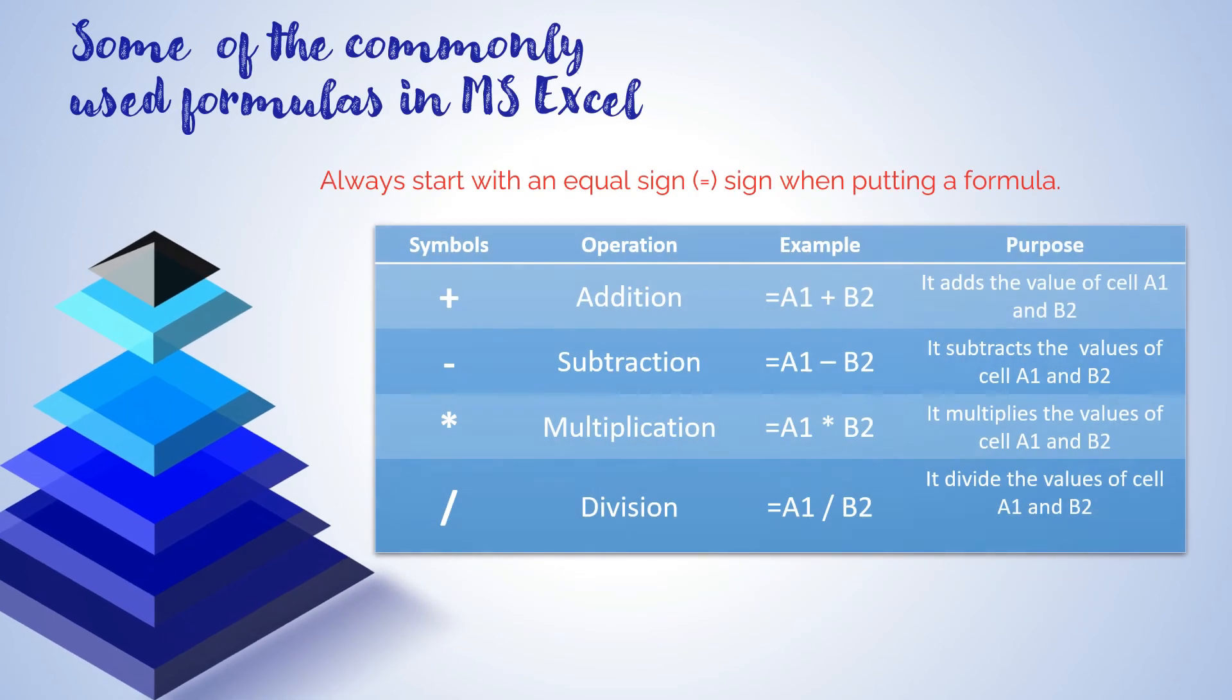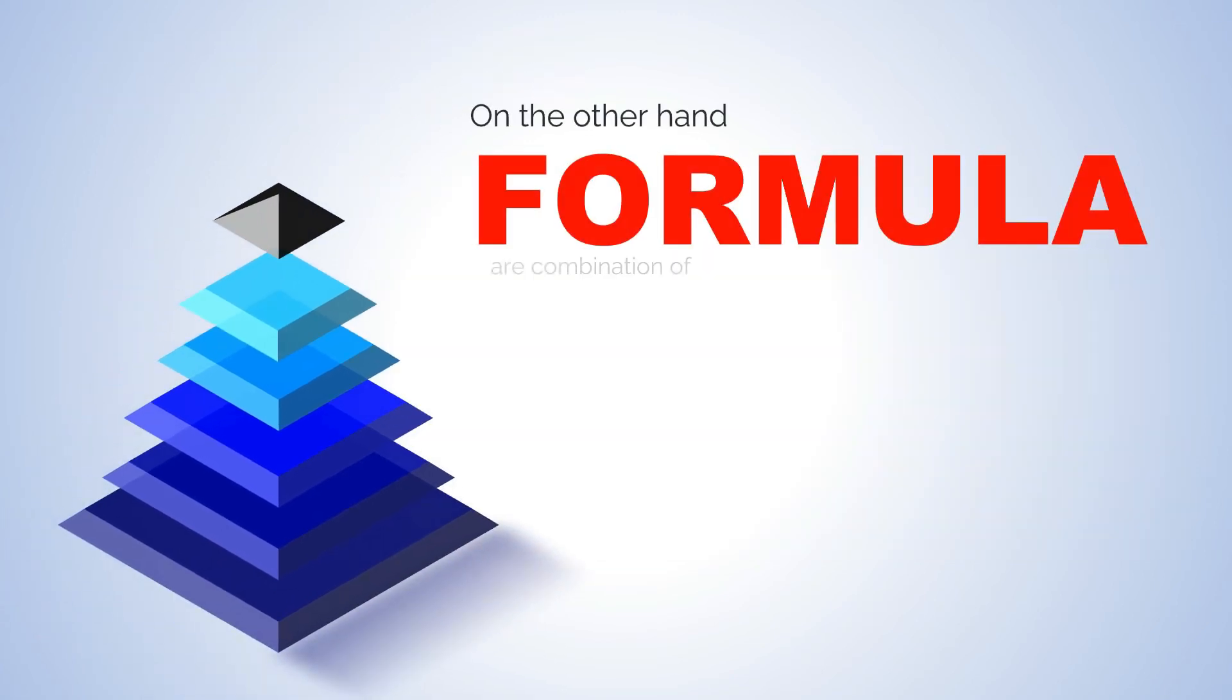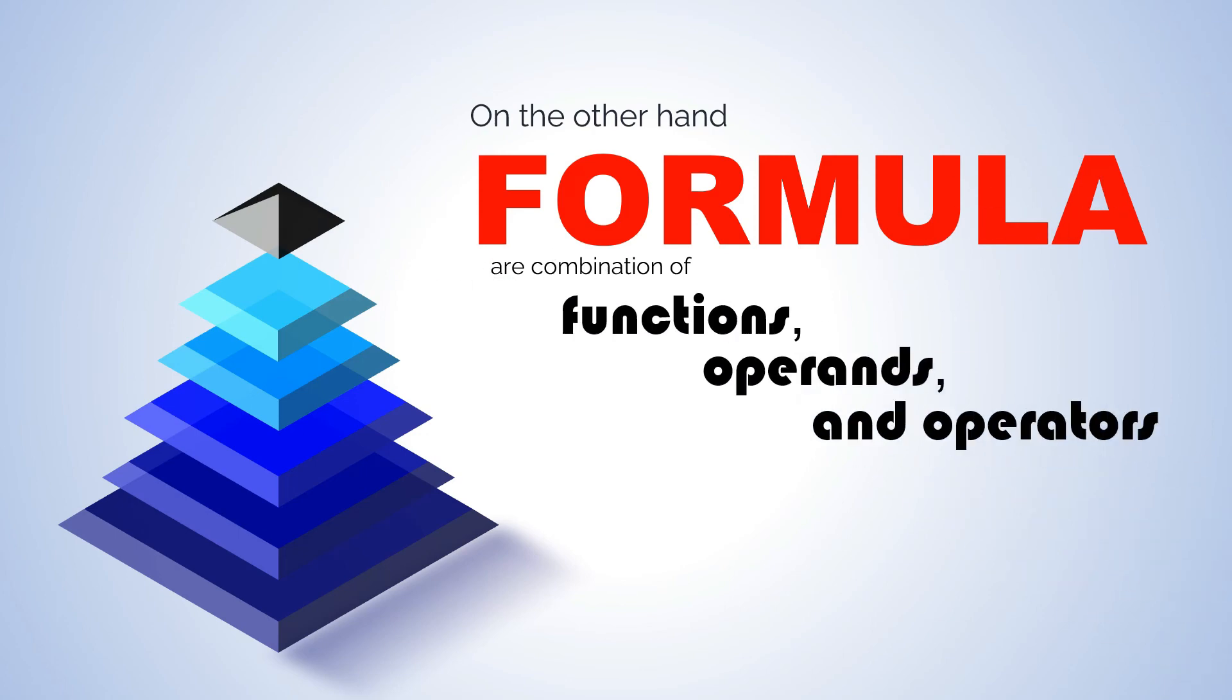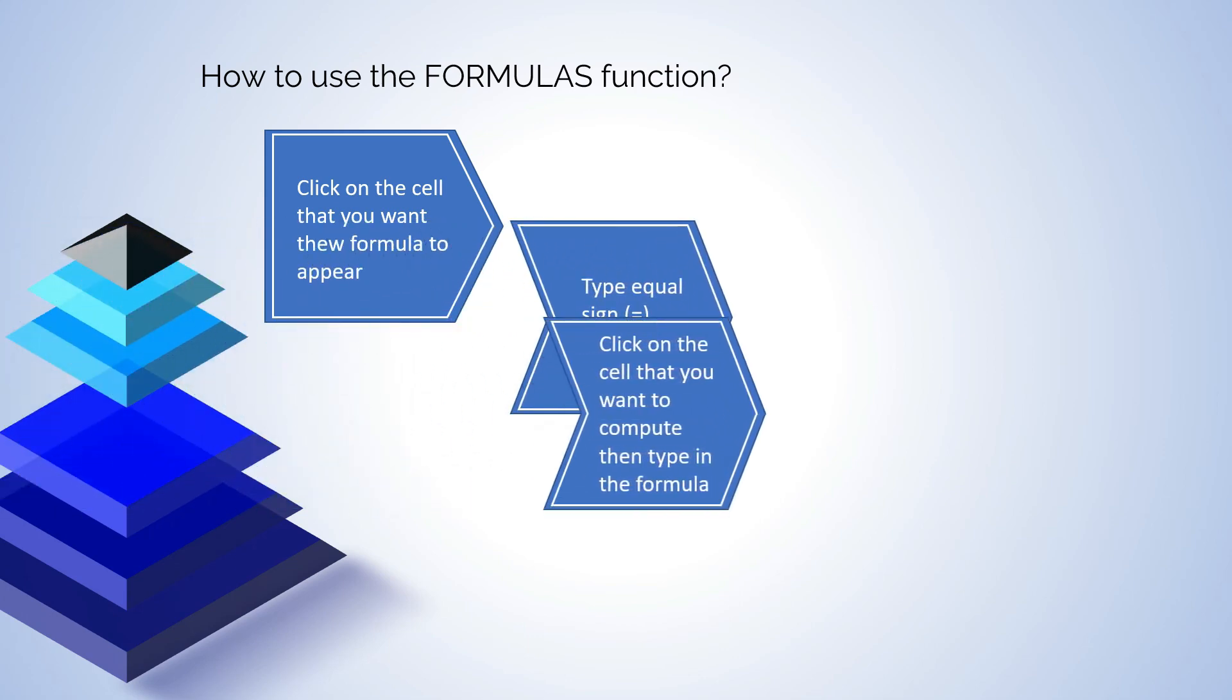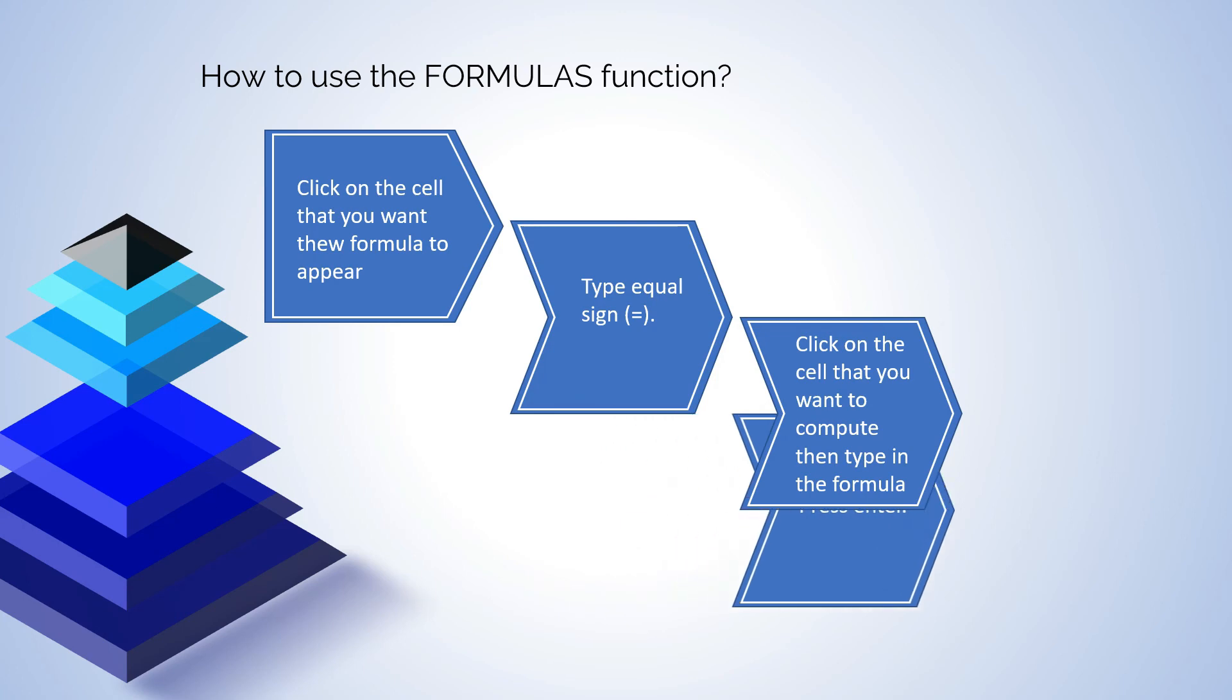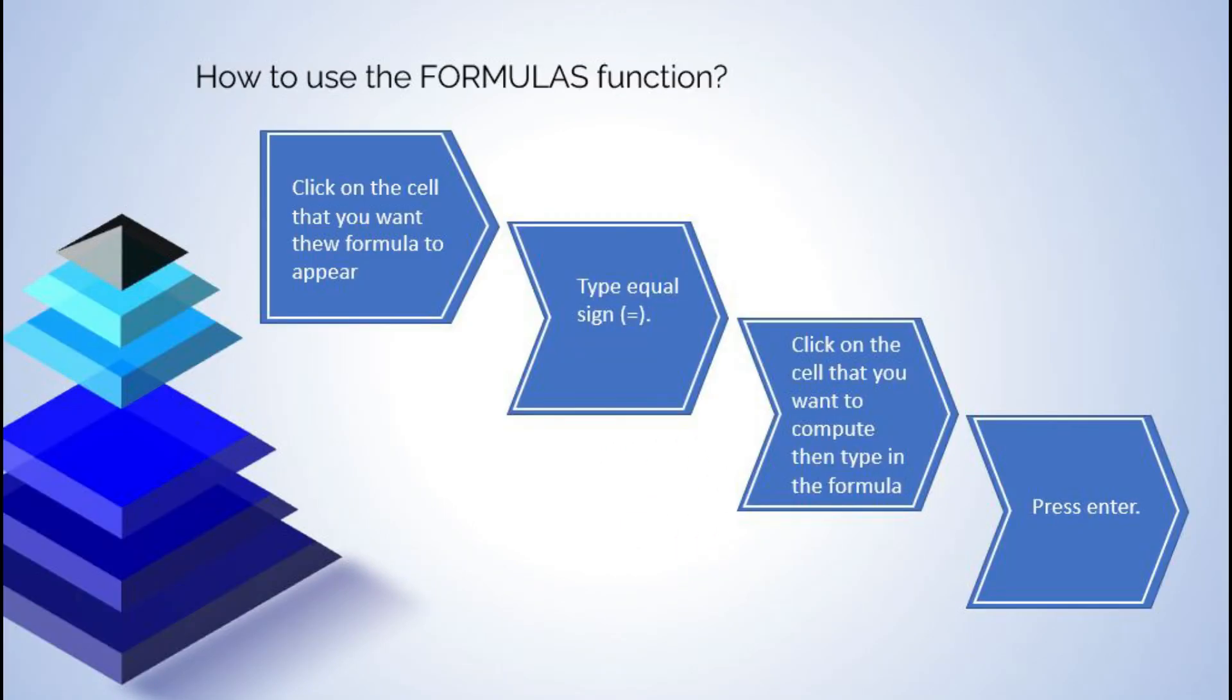Here's some of the commonly used formulas in Microsoft Excel. Always remember that when putting a formula, it always starts with an equal sign. On the other hand, formulas are combination of functions, operand and operators. These are used when you are manually calculating. How to use the formulas function. First, click on the cell that you want the formula to appear. Second, type equal sign. Third, click on the cell that you want to compute then type in the formula. And lastly, press enter.